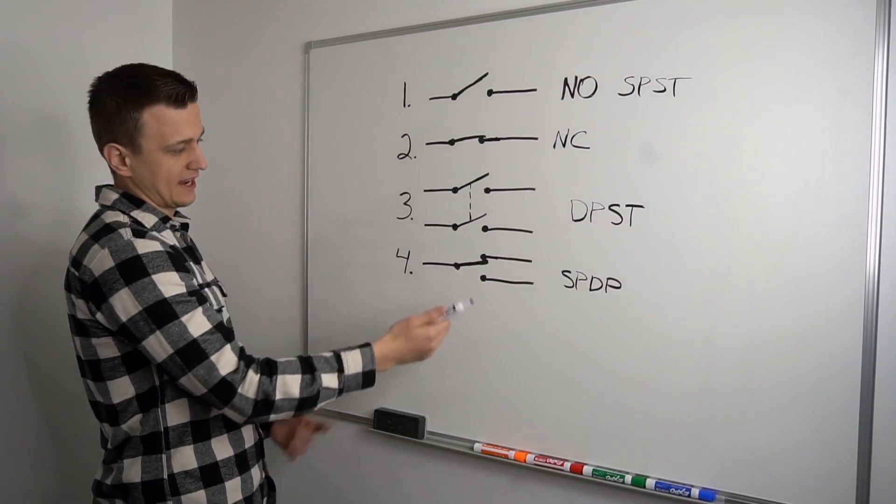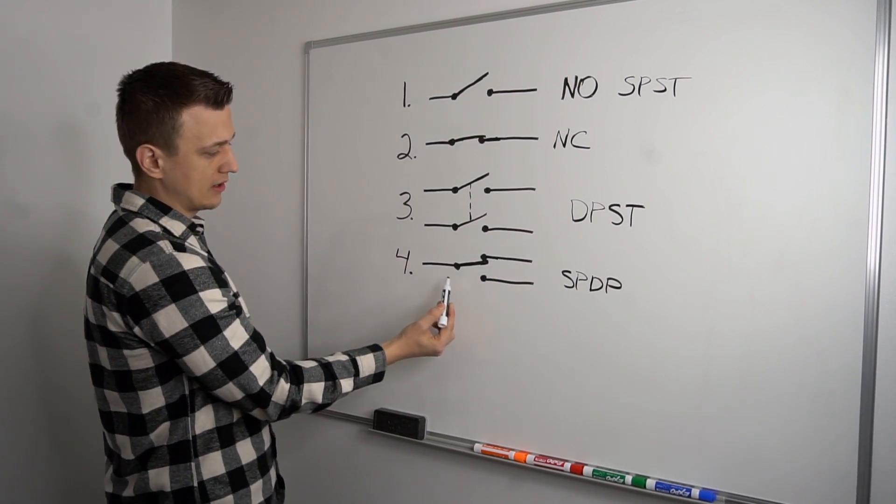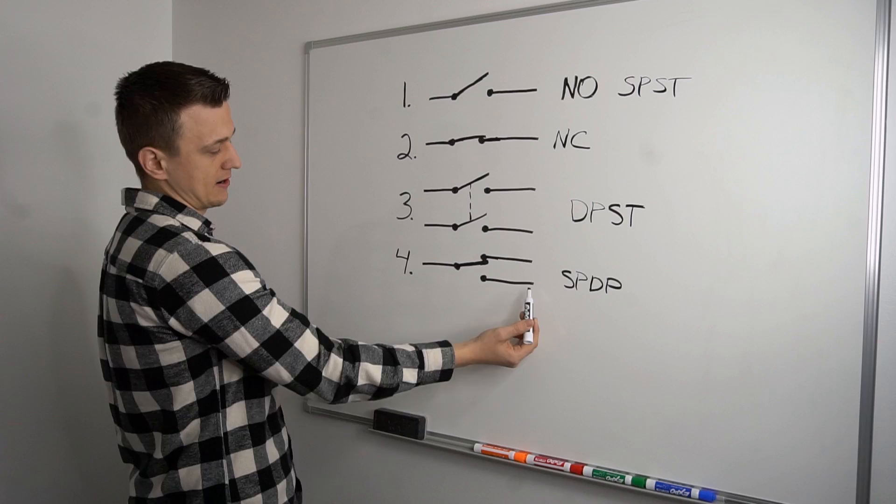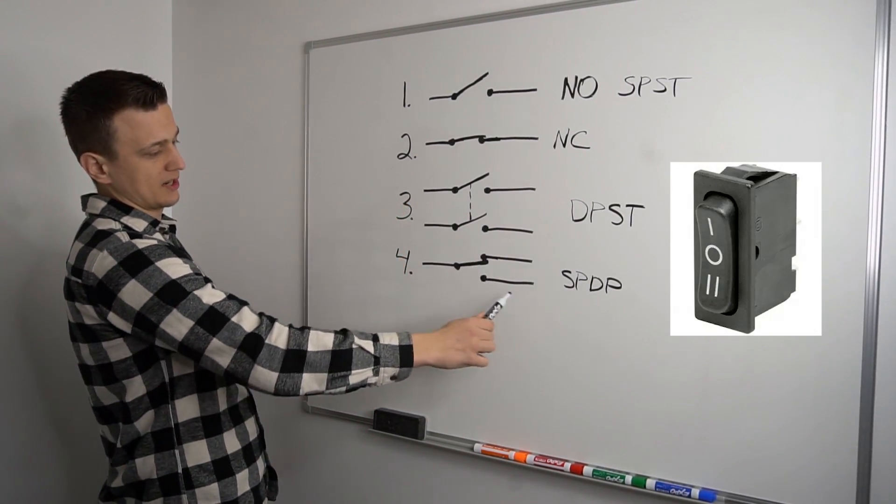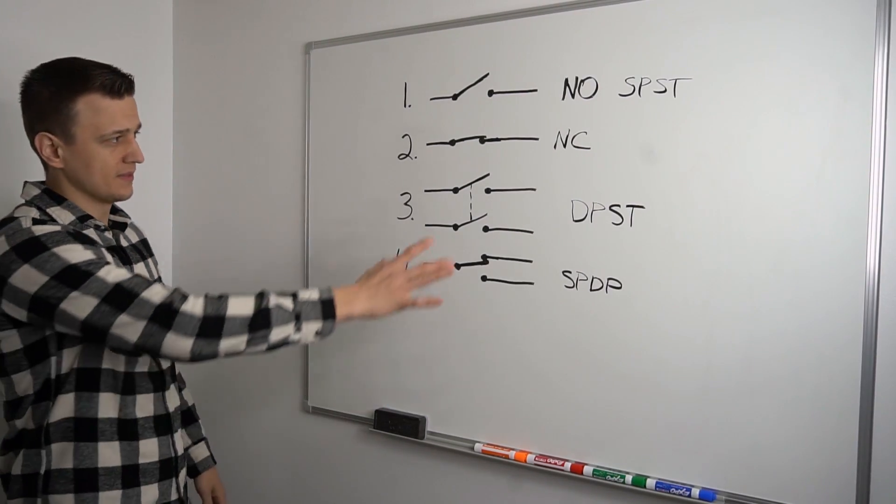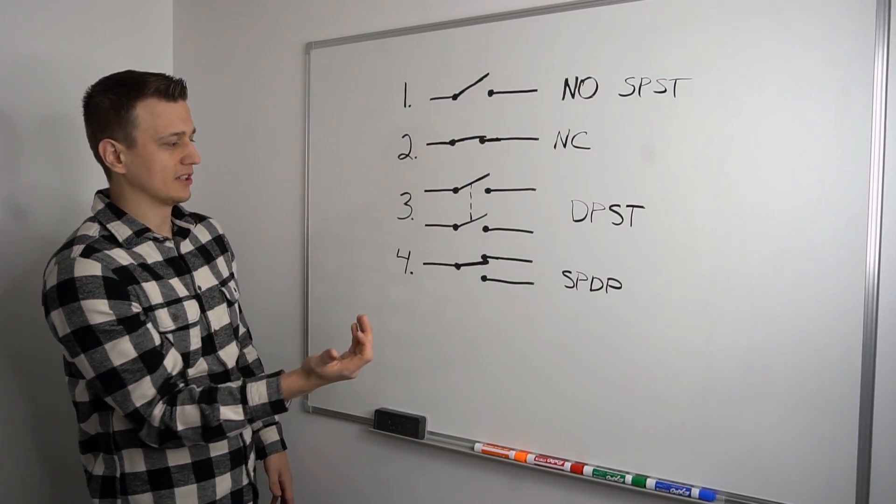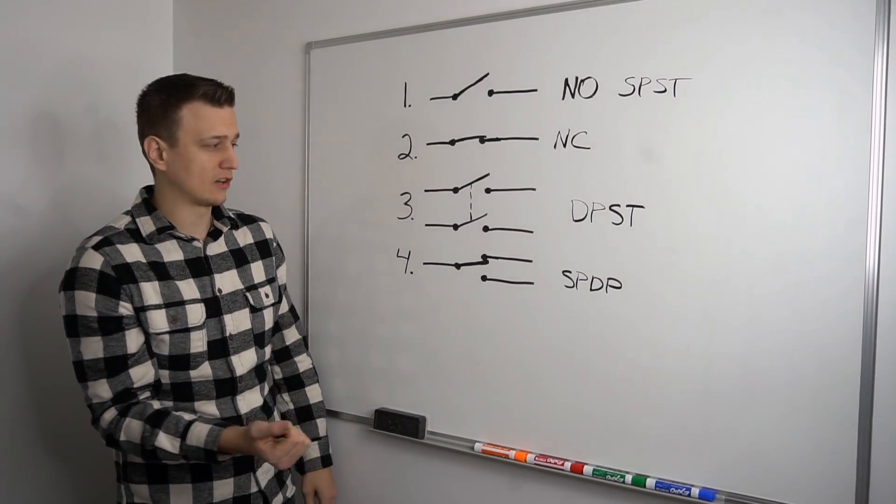So this switch right here has two positions. It'll either send power down this wire, or it'll send power down this wire. So the switch can be switched up or down, or however the switch looks like, to send power to one of these directions. And there is some variations to this.